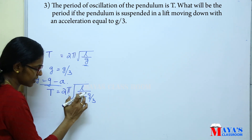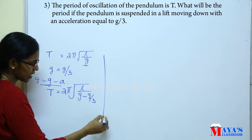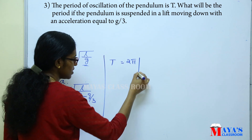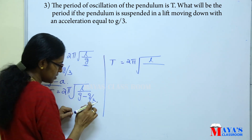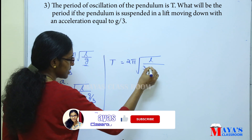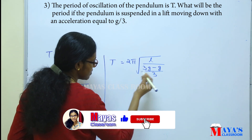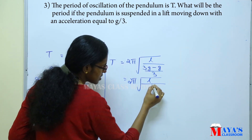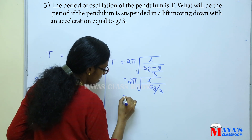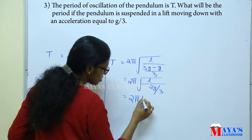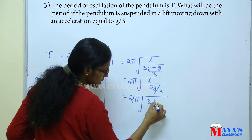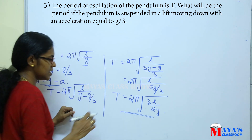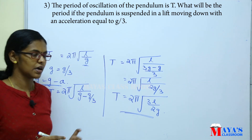When the lift moves down with acceleration g/3, the effective gravity becomes g minus g/3. So T equals 2π into root of L divided by (g − g/3), which simplifies to 2π root of L divided by (2g/3), giving T equals 2π into root of (3L divided by 2g).